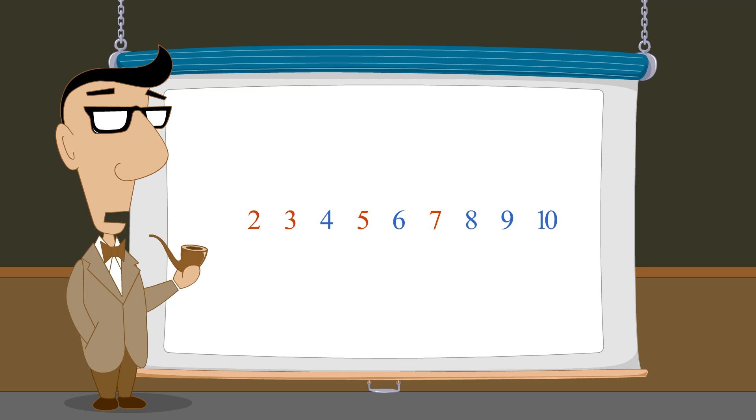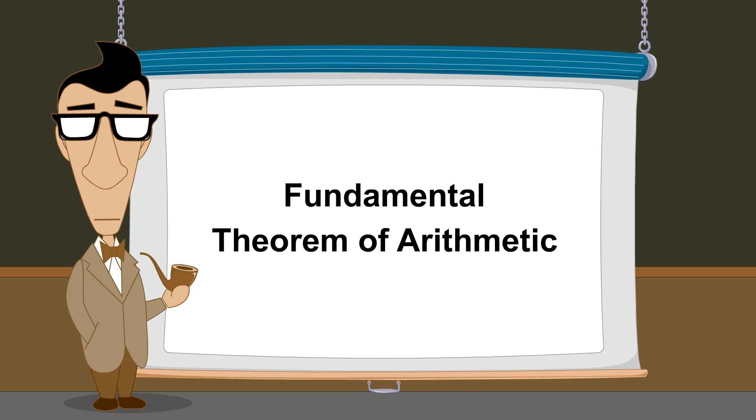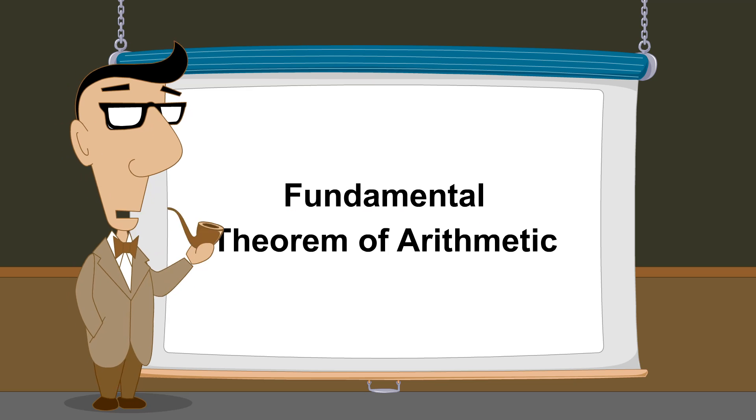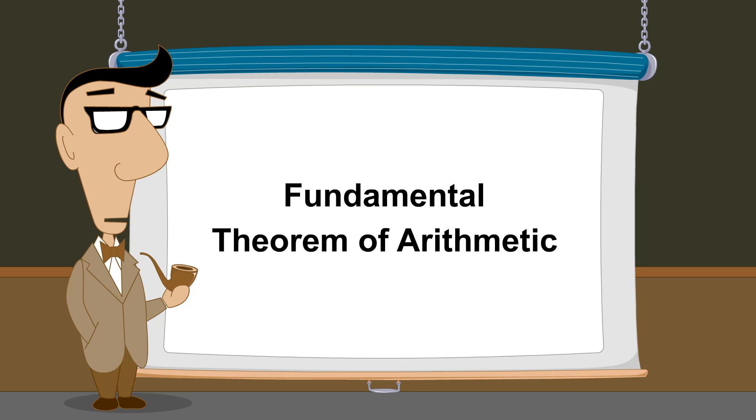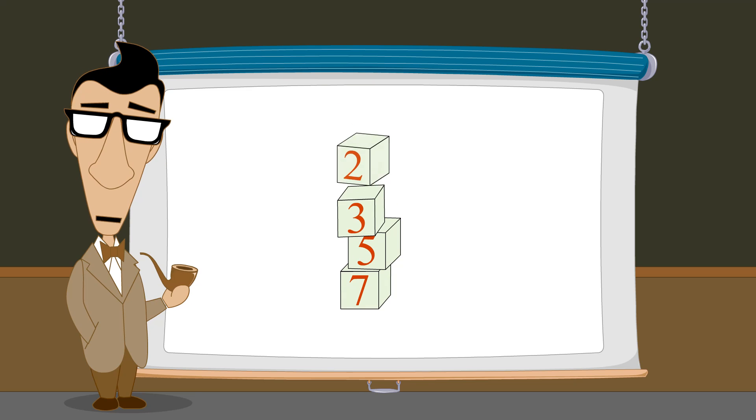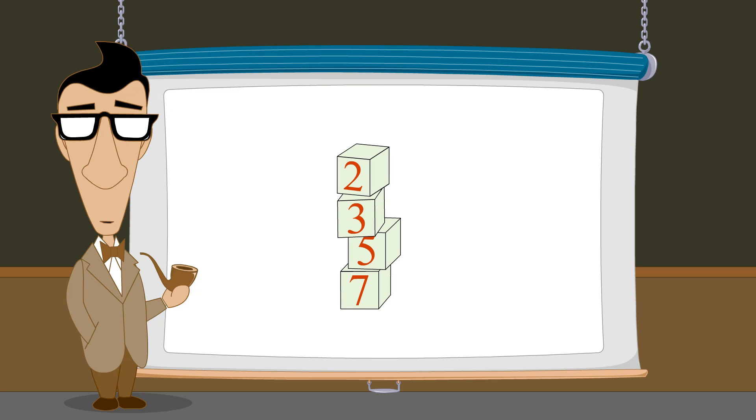In fact, one of the most important theorems of mathematics, called the Fundamental Theorem of Arithmetic, states that any integer greater than one can be written as a unique product of prime numbers. So we can think of prime numbers as the elementary building blocks of composite numbers.